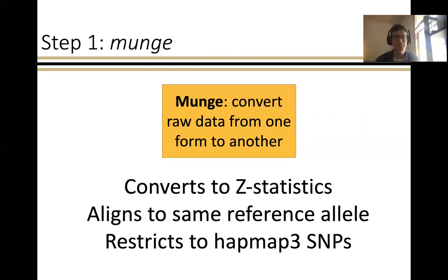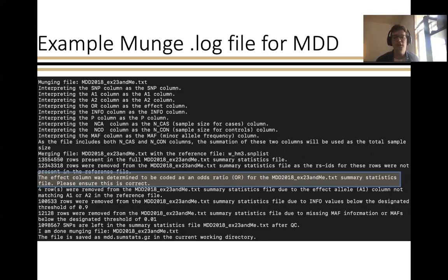When you run MUNGE, it produces a .log file for each of your traits, and it's important to check this to make sure all of your columns are being interpreted correctly. There can be a tendency to push forward with results without examining these log files, but you definitely want to make sure the data is being read in appropriately before proceeding. One particular thing to highlight is that for case-control traits, you really want to make sure the effect column is being interpreted correctly as either an odds ratio or not. For MDD, I know this is an odds ratio and I can see that the MUNGE function is interpreting it as such.